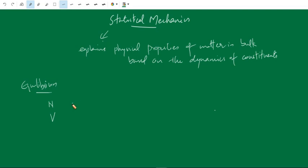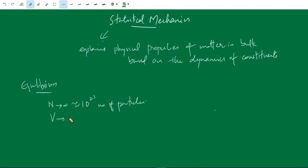N is very large for normal, ordinary systems. N is of the order of 10 to the 23 number of particles. This 10 to the 23 is just Avogadro's number — one mole of a system contains Avogadro's number of particles. We can think of N tending to infinity and V tending to infinity.